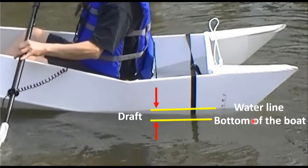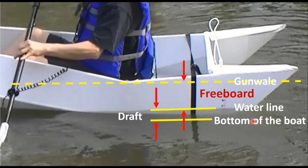The draft of a boat is the distance from the bottom of the boat to the waterline, and the freeboard is the distance from the waterline to the top edge or side rail of the boat, which we also call it as a gunner.